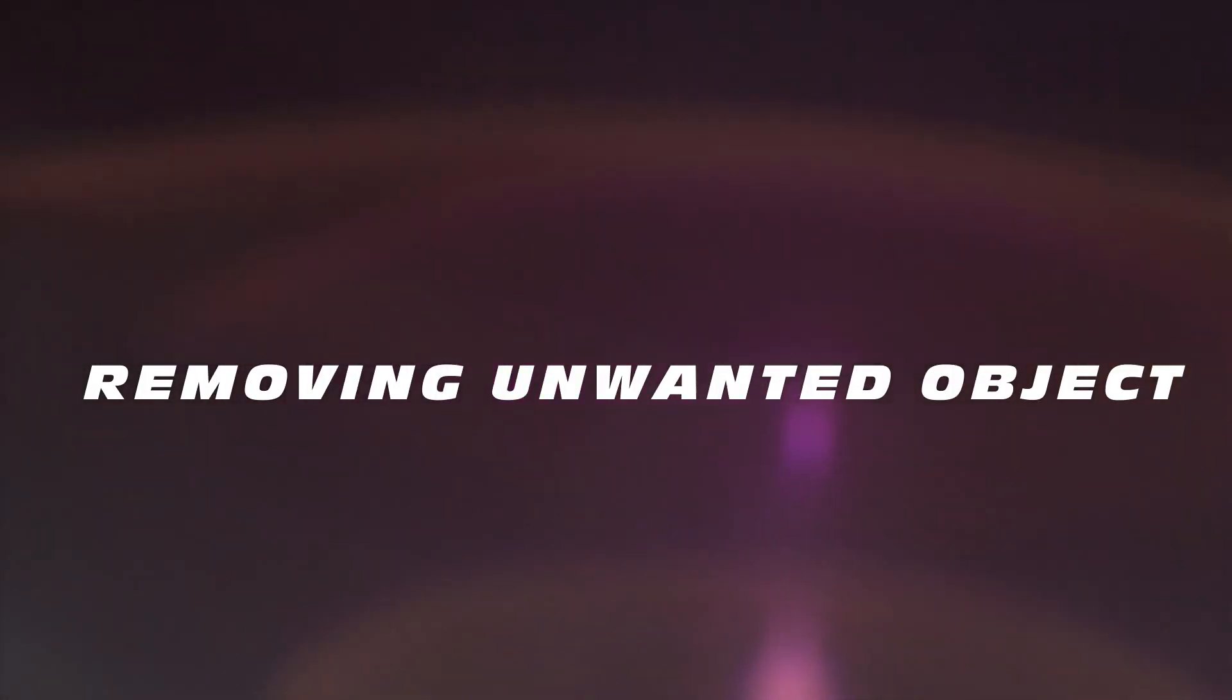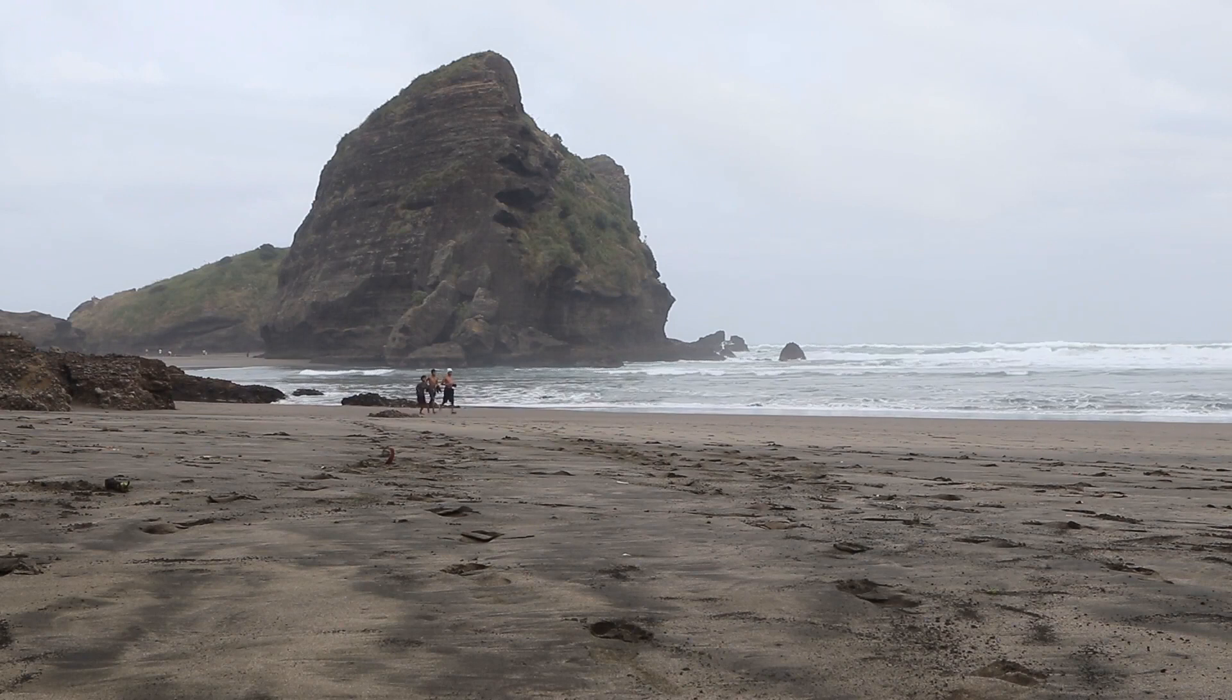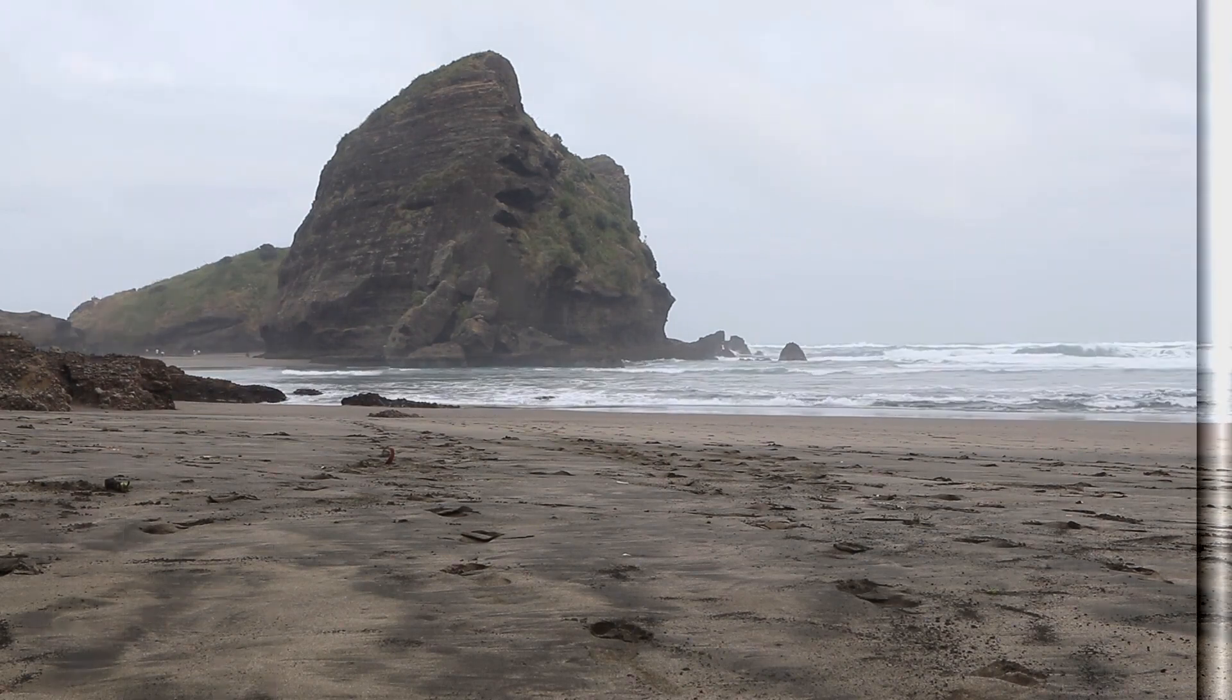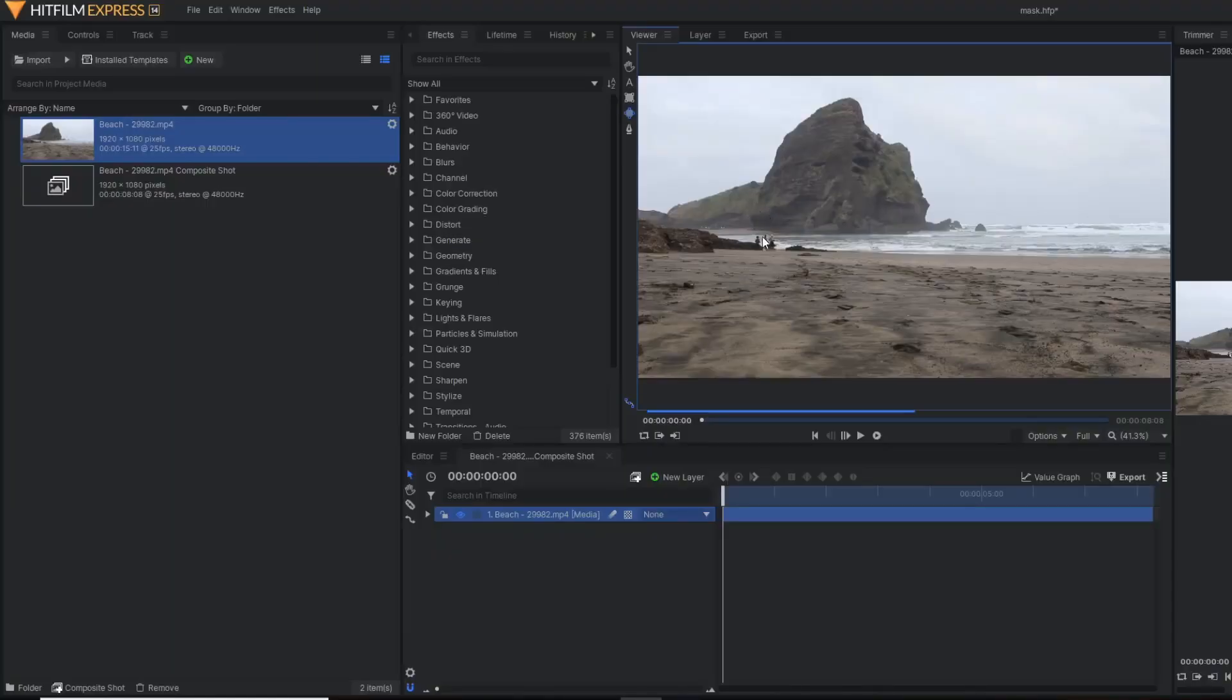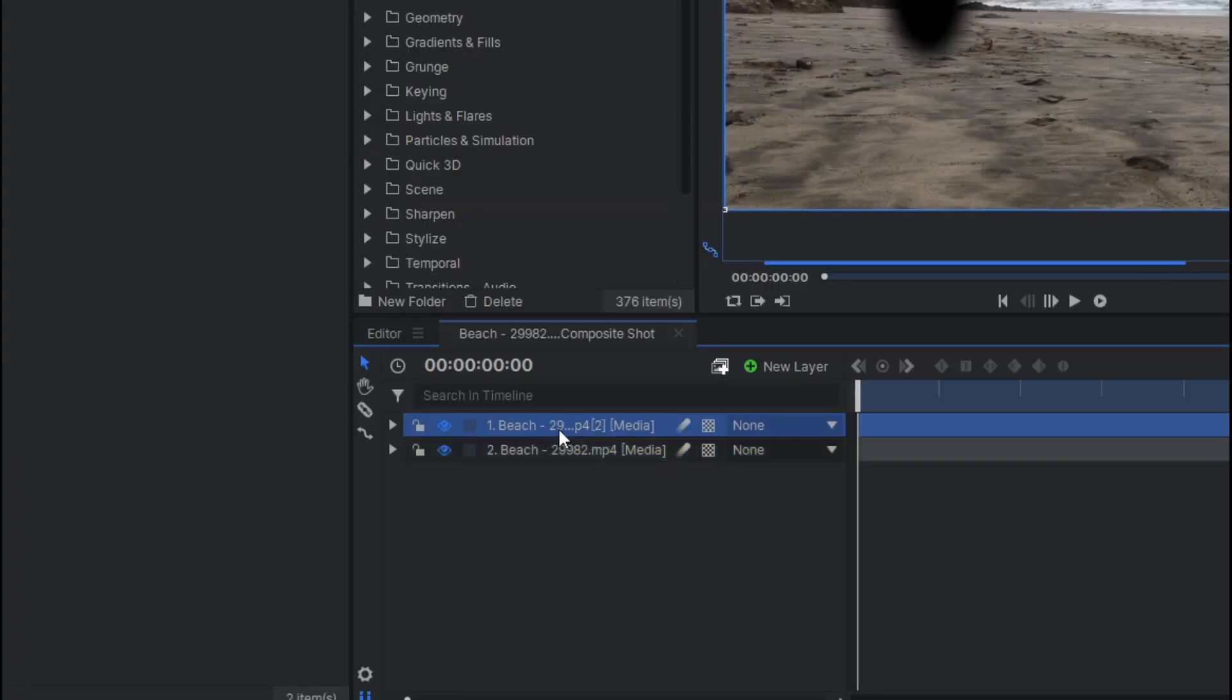2. Removing an unwanted object. Sometimes what happens when you shoot a video, some unwanted particles or unwanted objects come in your video frame. So in that case, it's very important to remove those elements, and you can achieve this with the help of masking only. Here you have to draw a mask over that unwanted object and just make it invert. After that, you simply need to duplicate the entire video clip and make the proper timeline adjustment. By using this, your object will be completely removed.